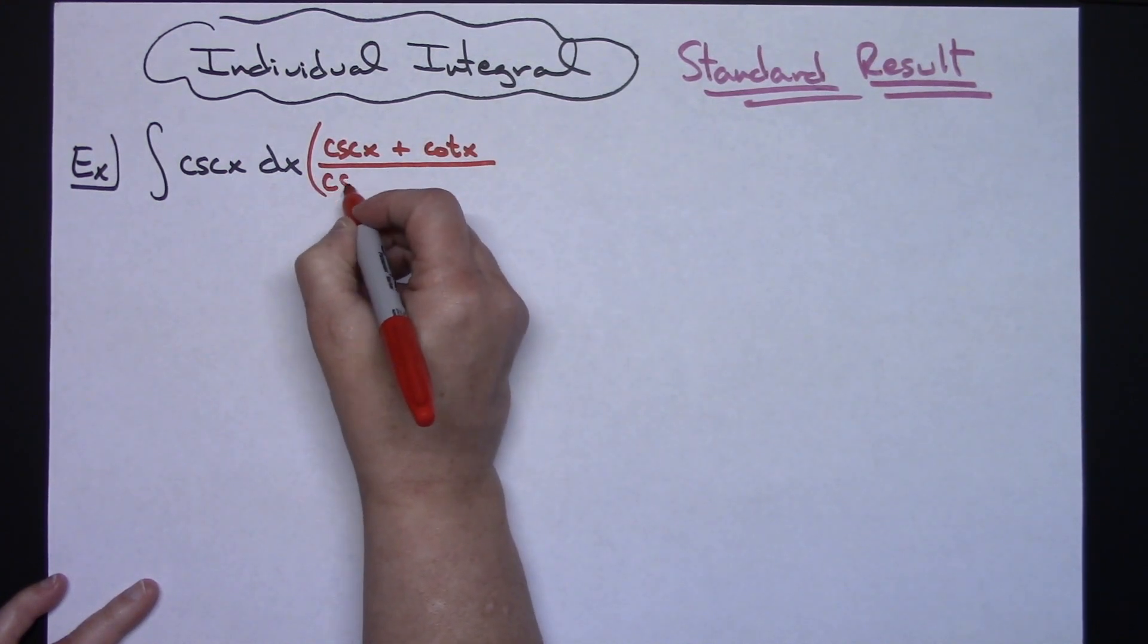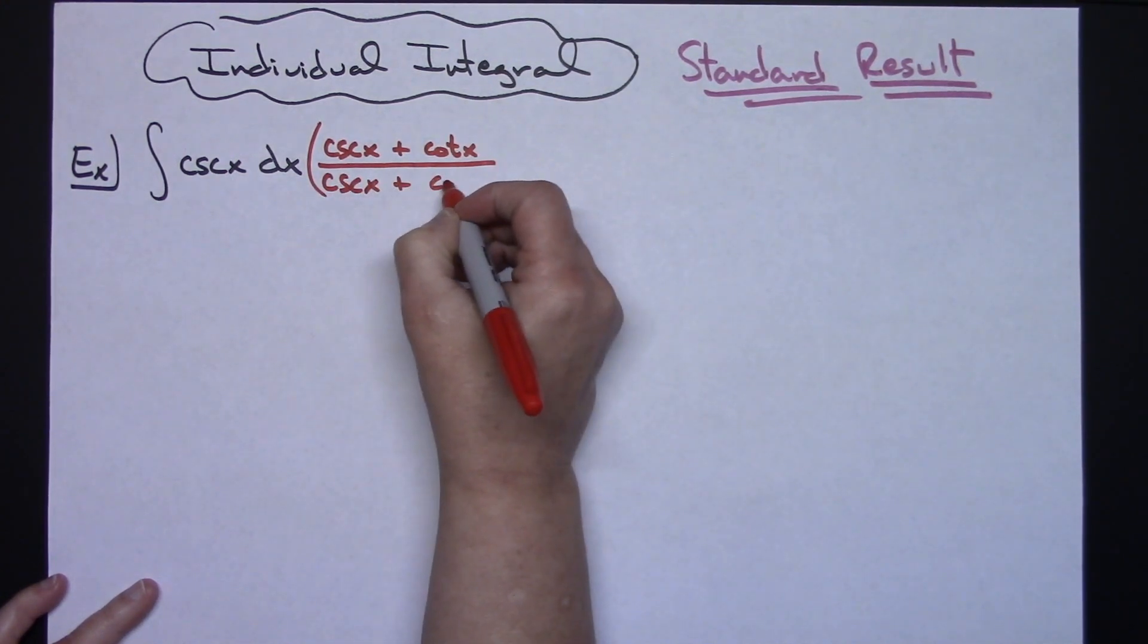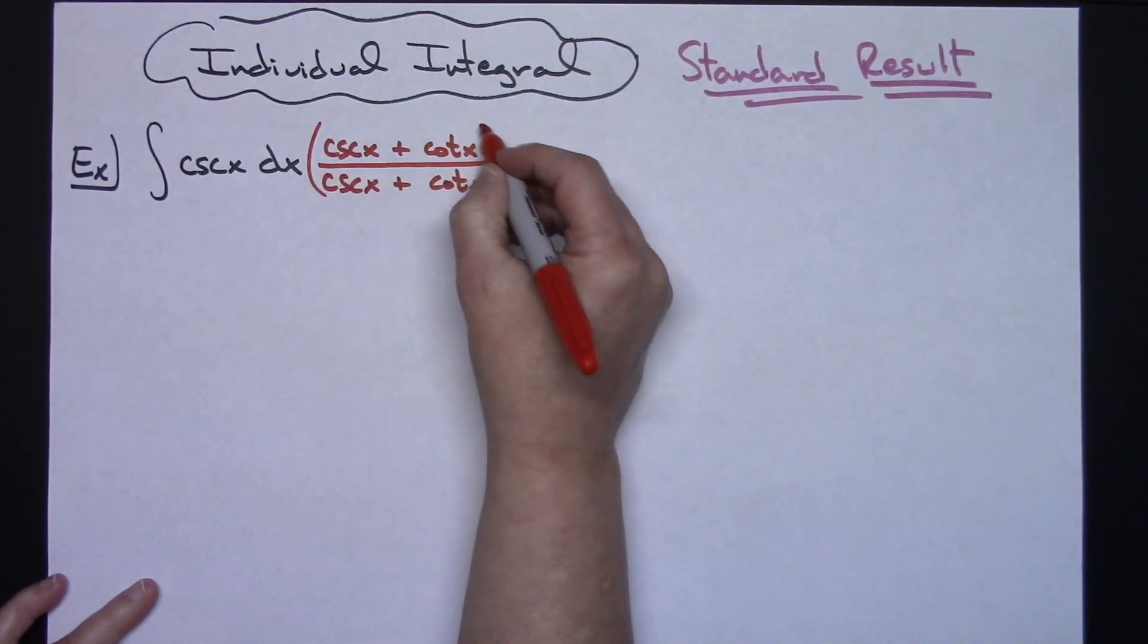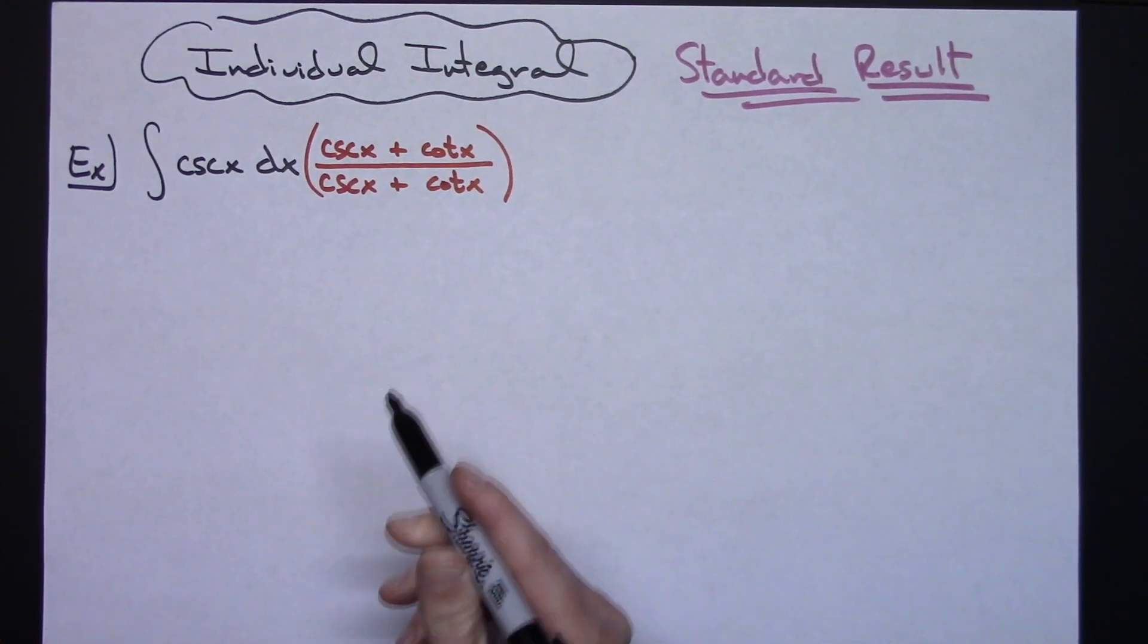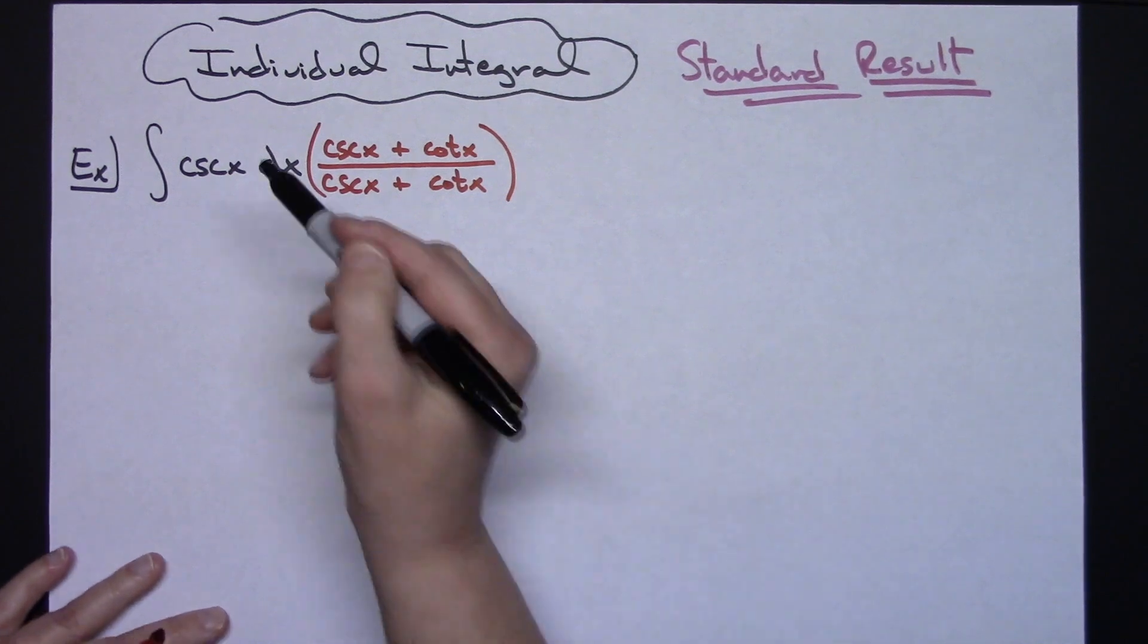As long as I multiply by a form of 1, I'm not changing the original function at all. That's the trick - multiply by this form of 1.